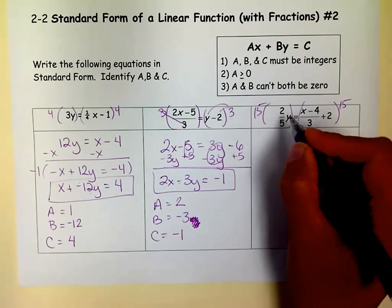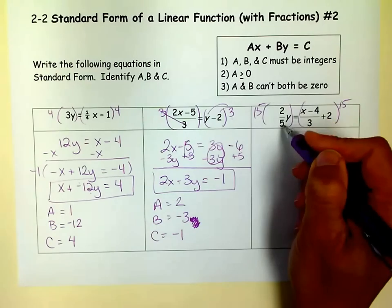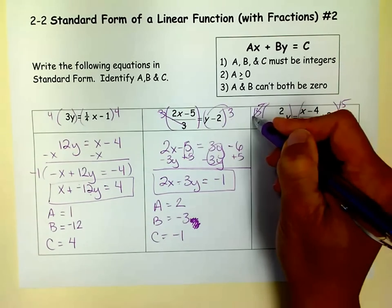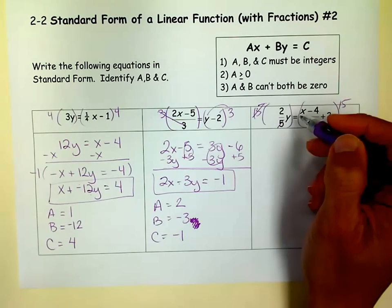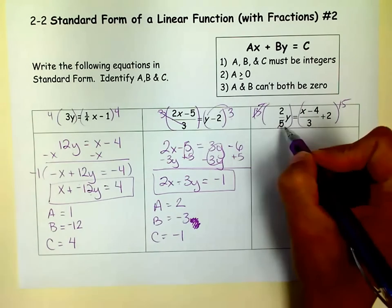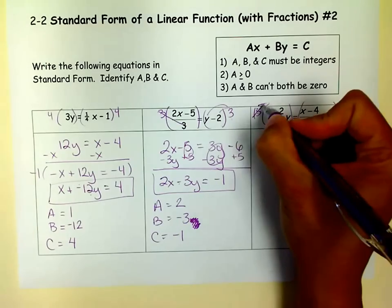So this side times 15, 15 divided by 5. We're going to reduce first. Always reduce first. It's so much easier than saying 30 divided by 5. Well, that's not too bad. But sometimes it's a little tricky. So 5 divided by 15 is 3. 3 times 2 is 6. So we have 6y.